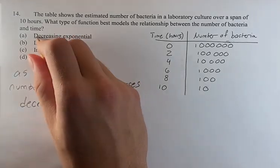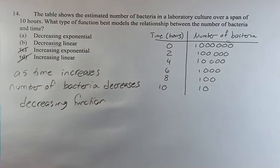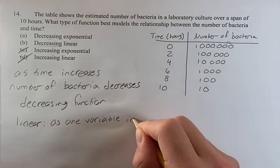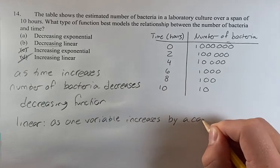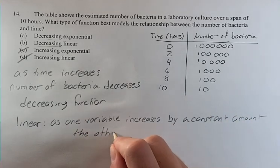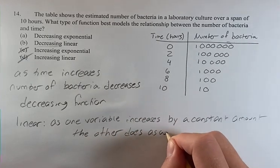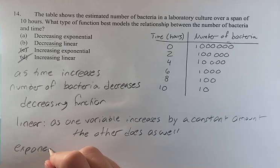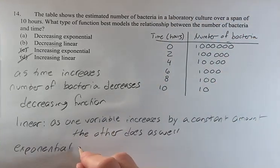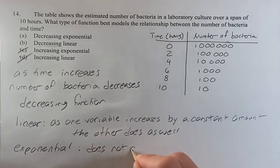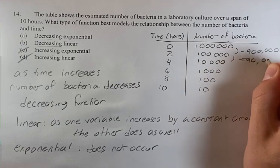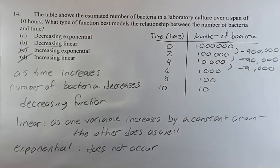Next, we're going to find out whether it's exponential or linear. In a linear function, as one variable increases by a constant amount, the other one also increases by a constant amount — a constant slope. In an exponential function, that's not the case. If we look at the table, you'll notice it goes from 100,000 to 10,000 to 1,000 to 100 to 10. Here we're losing 90,000; here we're losing 9,000 and so on. This is not linear.